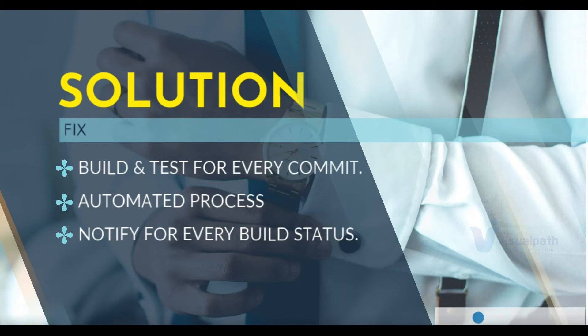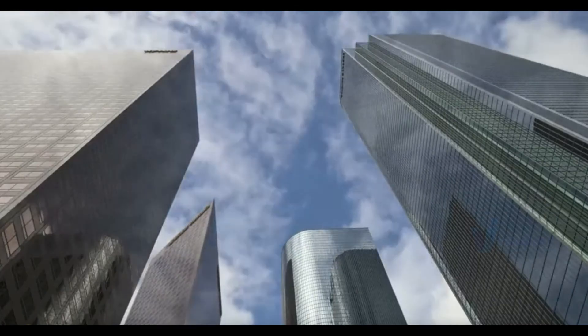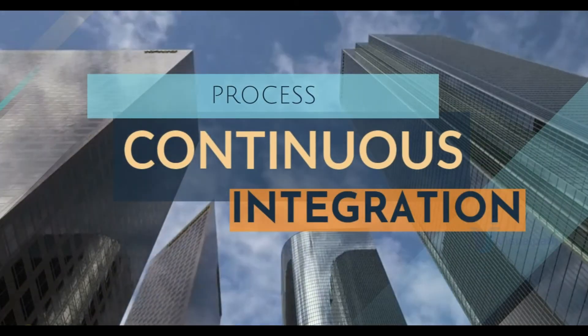Whenever there is a build and test of the code, the developer should get notified automatically. If there is a build failure, if the code is not passing quality gates, or if there is any bug or error, the developers will be stopped from whatever they're doing and forced to fix the code. If you have such an automation framework in place that will regularly build and test the code for every commit, you are also removing the developers' dependency on the build and release team. This process itself is called continuous integration.